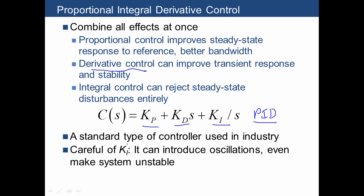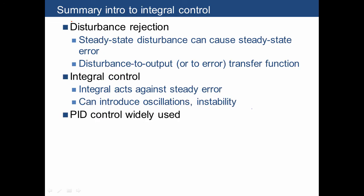One should be careful about using the Ki term, however, because a large Ki term can introduce oscillations and even make the system unstable. Let's review what we've talked about so far.